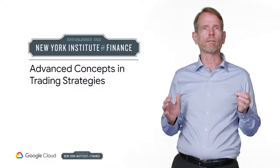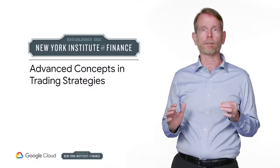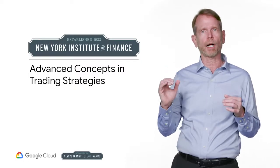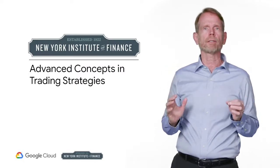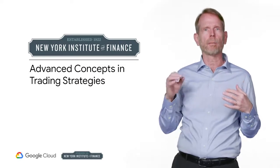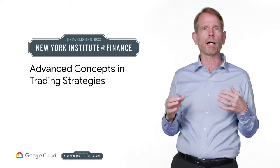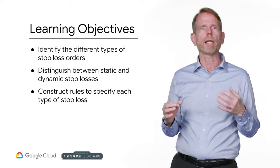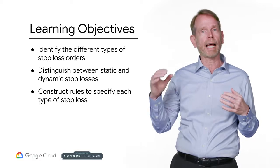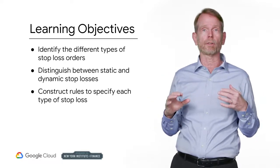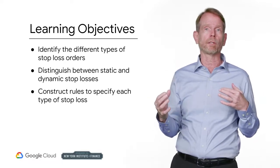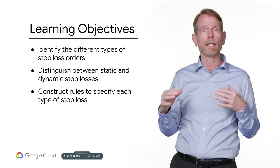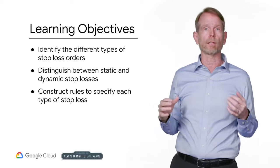Now that you have a good understanding of entries and exits in trading strategies, we're going to focus on one very important exit: the stop loss. This is probably the least popular feature of a trading strategy, but it is vital to managing P&L and to surviving in the trading world. We will look at the main types of stop losses and discuss the use of static and dynamic stop losses to help manage trading risk. We will also look at how to structure stop losses based on your trading view and changes in market prices and volatility.